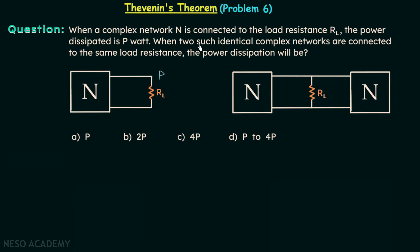When two such identical complex networks are connected to the same load resistance, what will the power dissipation be? This scenario is shown here: the same complex network N taken two times, connected with the load resistance RL. We are required to find out the power dissipation through the load resistance. There are four options given and we need to find the correct one.